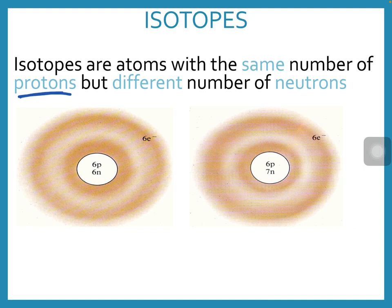Remember that the number of protons determines the element. So we're talking about the same element but with a different mass because we have a different number of neutrons.